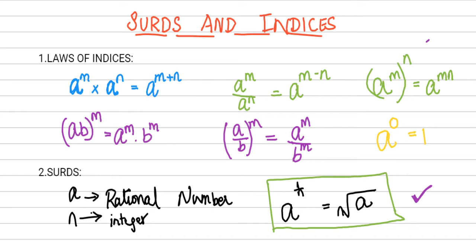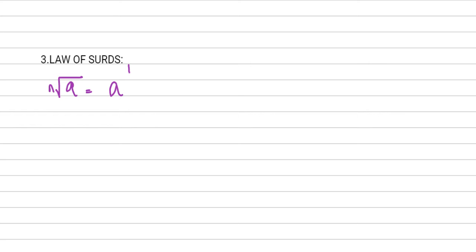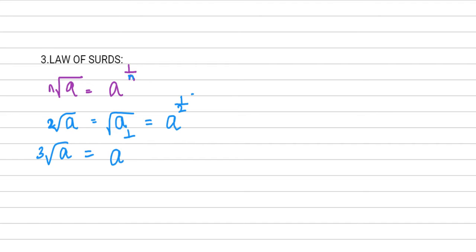As we have seen, the nth root of a is nothing but a to the power one over n. If we take n as 2, the square root of a equals a to the power 1 over 2 — and when n is 2, you can write the square root symbol without mentioning the number. Similarly, if n is 3, that is the cube root, it can be represented as a to the power 1 over 3.